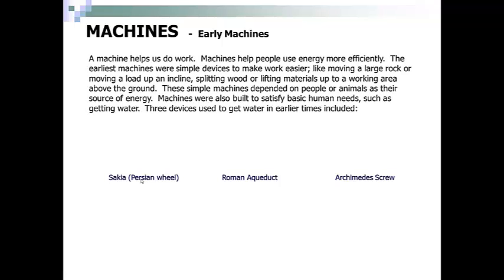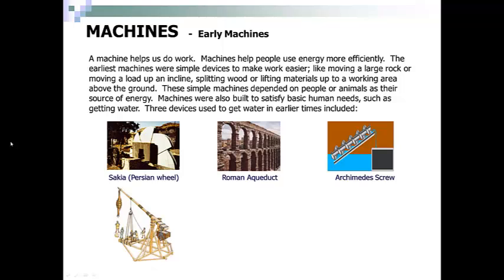A machine helps us do work. Machines help people use energy more efficiently. The earliest machines were simple devices to make work easier, like moving a large rock or moving a load up an incline, splitting wood, or lifting materials to a working area above the ground. These simple machines depended on people or animals as their source of energy. Machines were also built to satisfy basic human needs, such as getting water. Three devices used to get water in early times included a Persian wheel, which is right here, an aqueduct, and an Archimedes screw.